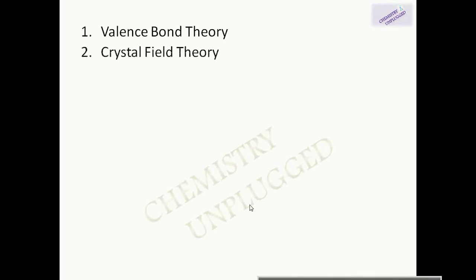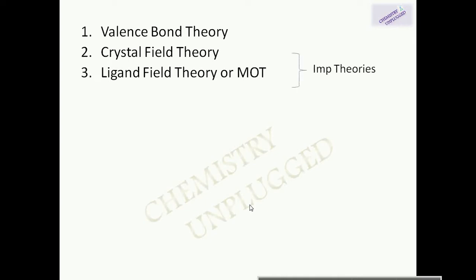There are three theories to explain metal and ligand bonding in coordinated complexes: valence bond theory, crystal field theory, and ligand field theory or molecular orbital theory. Among them, crystal field theory and ligand field theory are the most important.